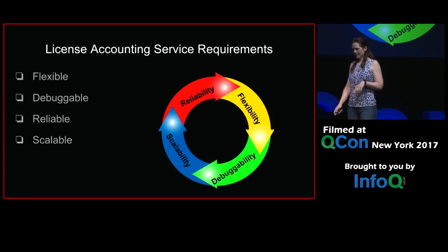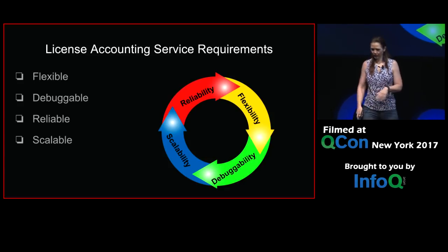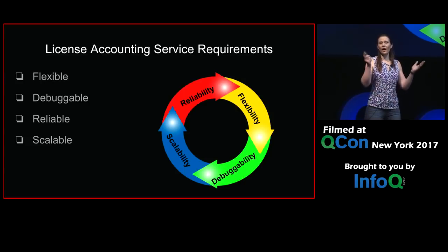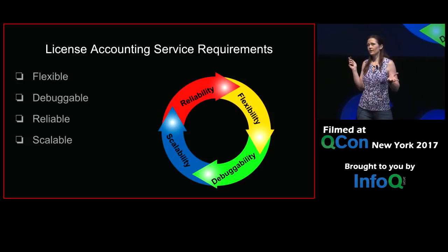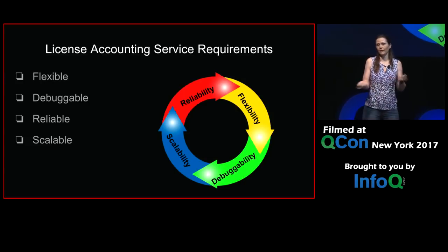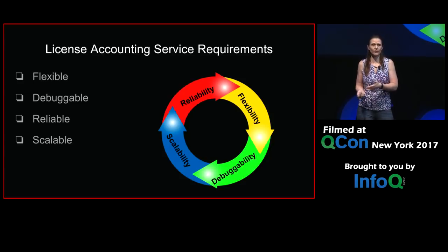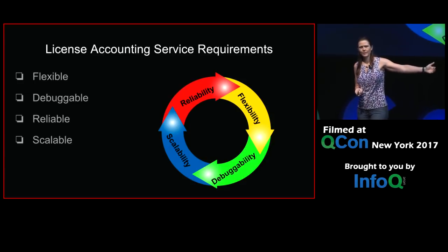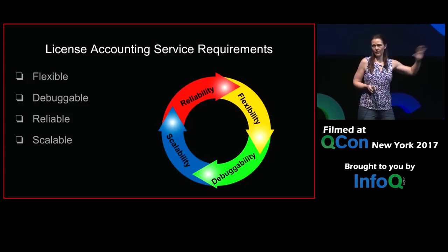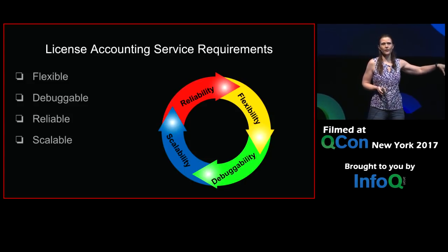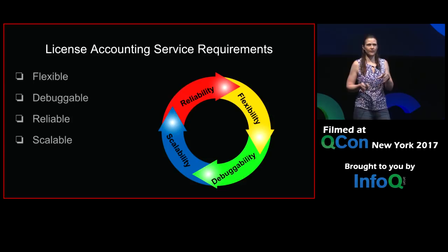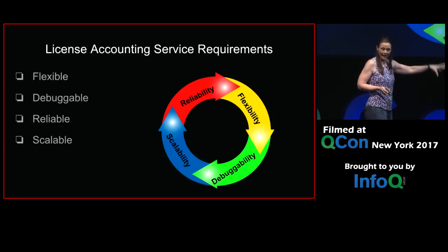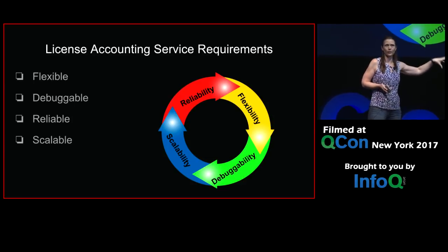Secondly, it needs to be debuggable. We could have a year's worth of data. A customer could come in and say, 'I just got a validation error saying I can't download this because I've hit my download limit for something that happened three months in the past.' We need to be able to look back three months and say, at that point in time, what happened that caused this error, and where is the bug in our system that was counted by that three-month-ago issue?